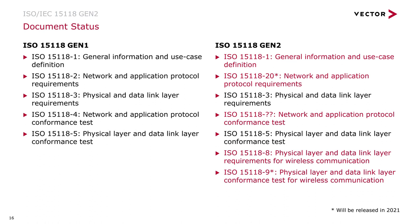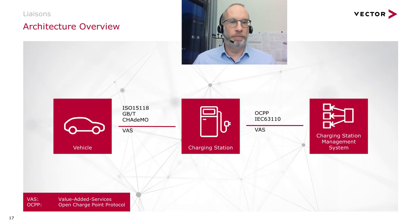So what are the differences between Generation 1 and Generation 2 in terms of documents? We have an updated dash-1 document with new use cases, and a new network and application protocol requirements document — dash-20. We have also introduced a new physical layer document — dash-8 — for Wi-Fi communication. The corresponding conformance tests are: dash-9 for physical layer conformance testing (already in progress), and conformance tests for the application and network protocol which will be worked on after the dash-20 document is finalized.